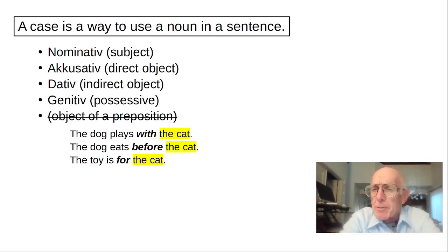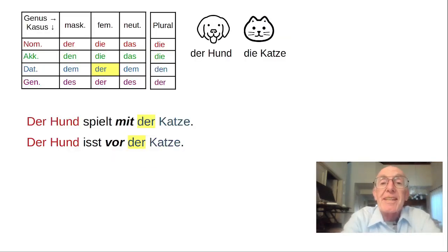So how do we handle the object of a preposition in German? Some prepositions take Dativ. For example, Der Hund spielt mit der Katze. The dog plays with the cat. And Der Hund isst vor der Katze. The dog eats before the cat. Both of those take Dativ.